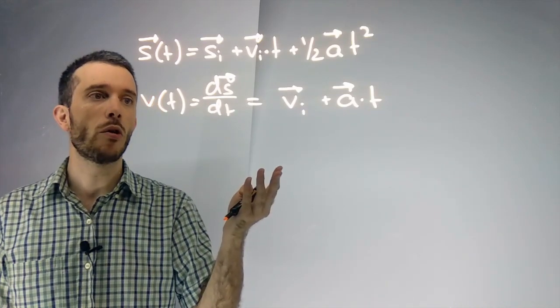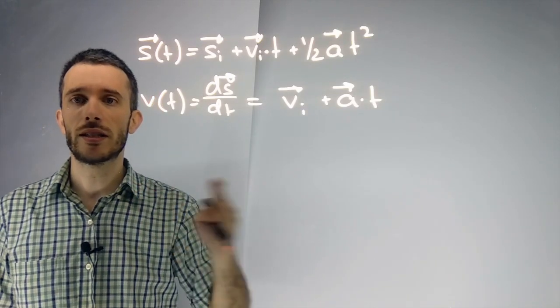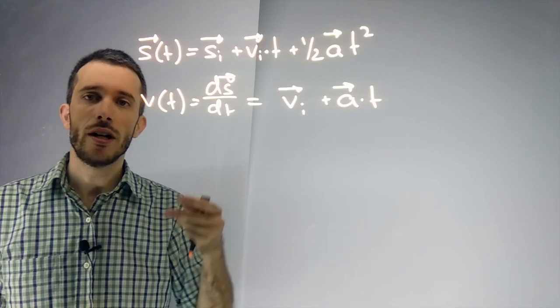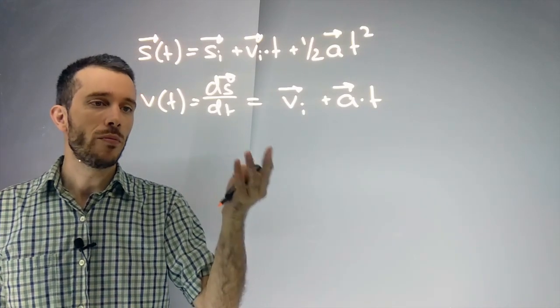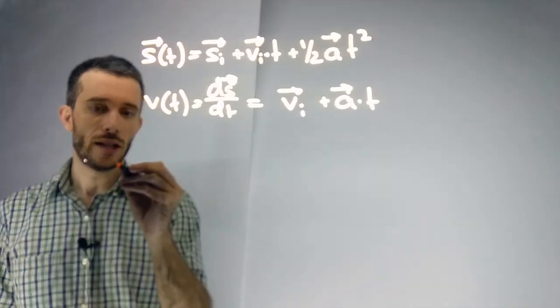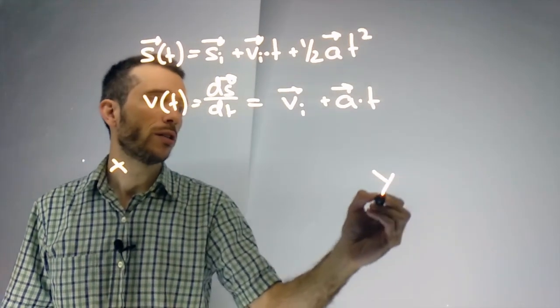What is interesting in 2D motion is that what happens in the x-direction and what happens in the y-direction is completely independent. Meaning you can rewrite this as an x-equation or a y-equation.